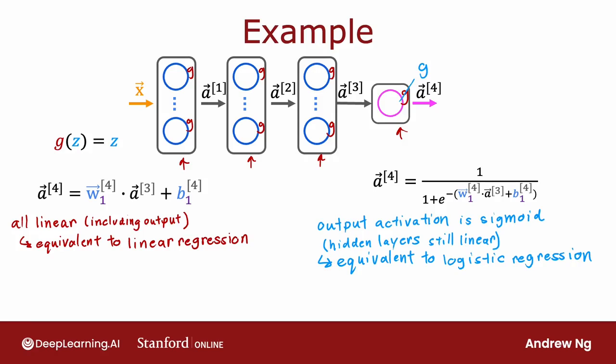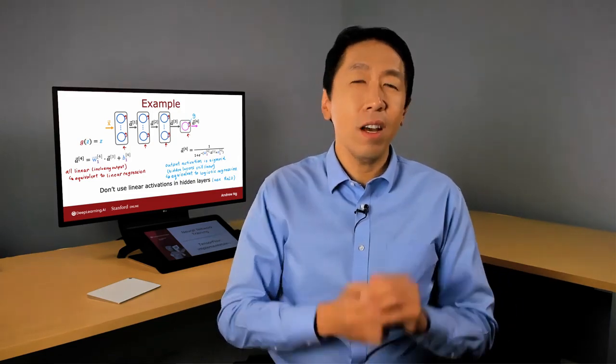That's why a common rule of thumb is don't use the linear activation function in the hidden layers of your neural network. And in fact, I recommend typically using the ReLU activation function, which should do just fine. So that's why a neural network needs activation functions other than just the linear activation function everywhere.